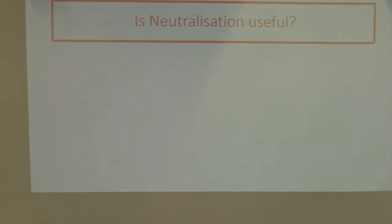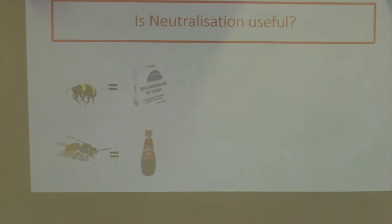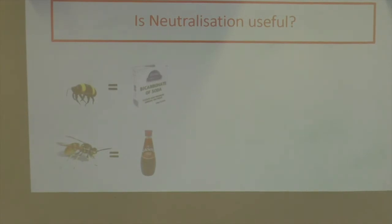We can apply the science of neutralization to everyday examples. A bee sting is acidic, so to neutralize it you need to add something alkaline. You could use bicarbonate of soda, soap, or toothpaste — these are all alkali. Adding them to a bee sting will stop the stinging sensation by neutralizing the acid.